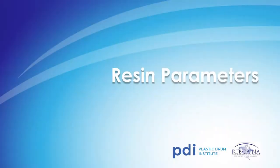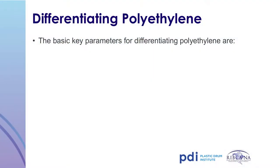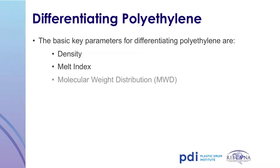Next, we'll discuss the key properties of various types of polyethylene, focusing on high density polyethylene. There are many different ways to categorize the properties of polyethylene, but we'll focus on three key attributes: density, melt index, and molecular weight distribution.